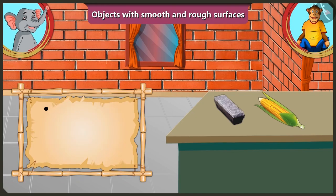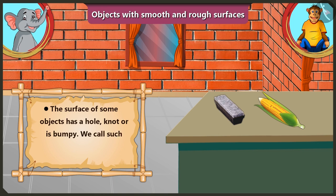Appu, when the surface of an object has a hole, knot, or if it is bumpy, we call that surface a rough surface. Which means the surface is rough and our hand cannot slide on it easily.